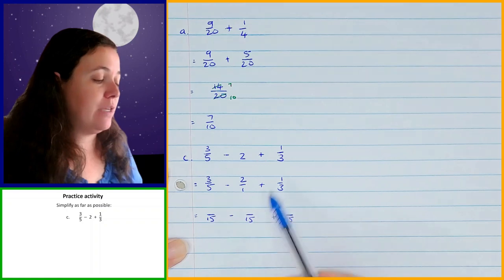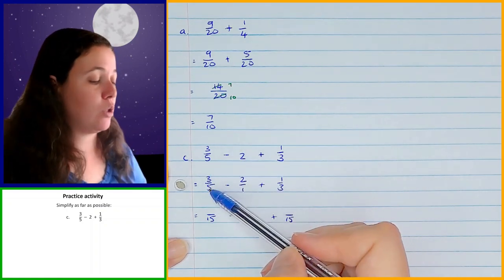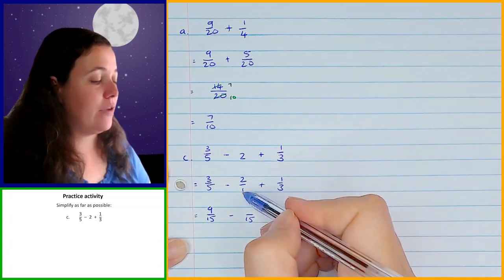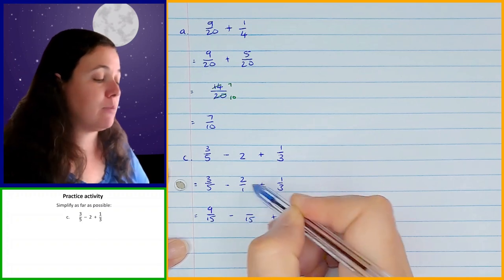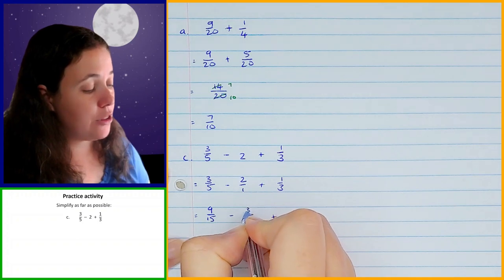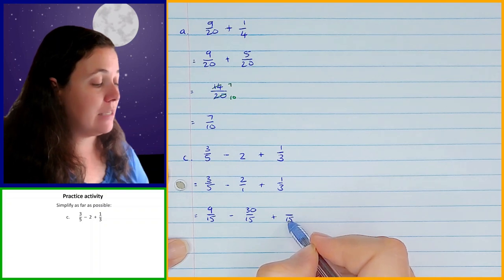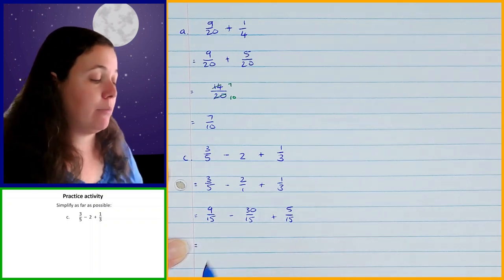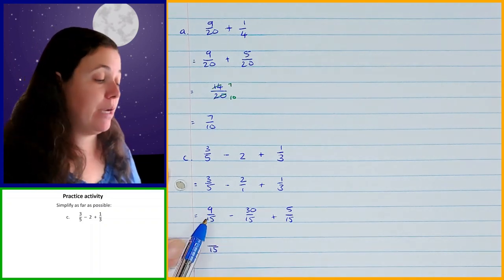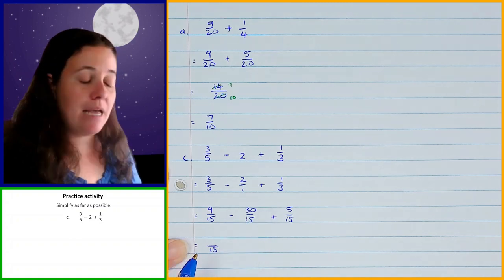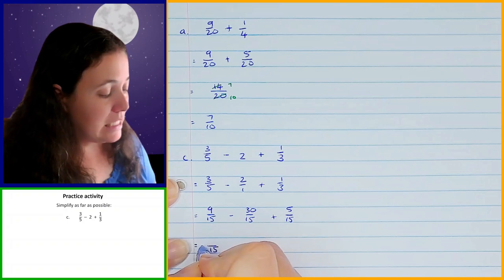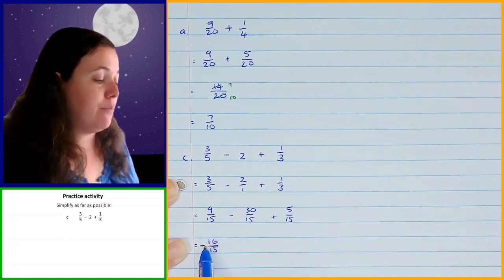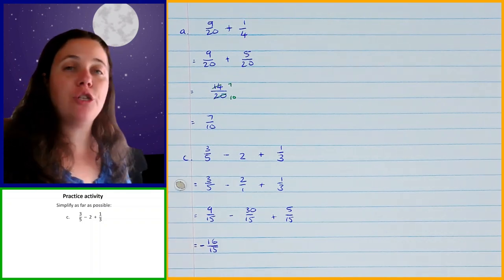So that's going to be something over 15 minus something over 15 plus something over 15. What do I do to 5 to get 15? I need to multiply by 3, so this is going to become 3 times 3 which is 9 over 15. Then over here I need to multiply 1 by 15 to get 15, so I need to multiply the numerator by 15 as well, giving me 2 times 15 which is 30. And then for 1 over 3, I multiply 3 by 5 to get 15, so I need to multiply 1 by 5, giving me 5 over 15. Now I can add and subtract the numerators: 9 minus 30 plus 5 gives me negative 16. So the answer is negative 16 over 15.